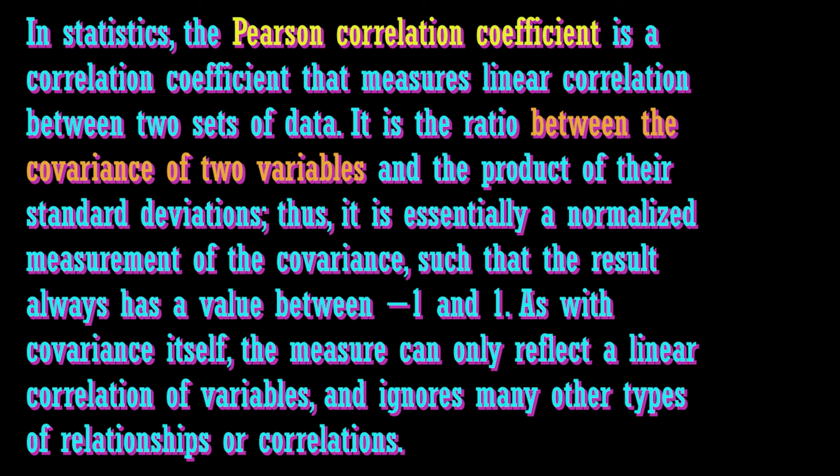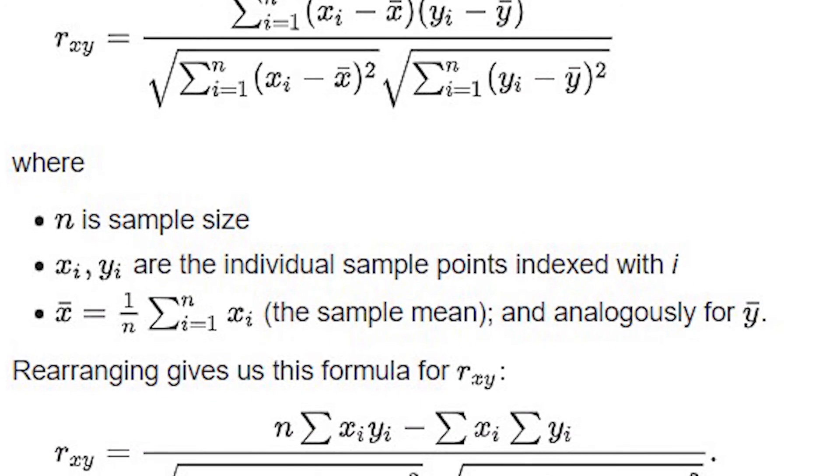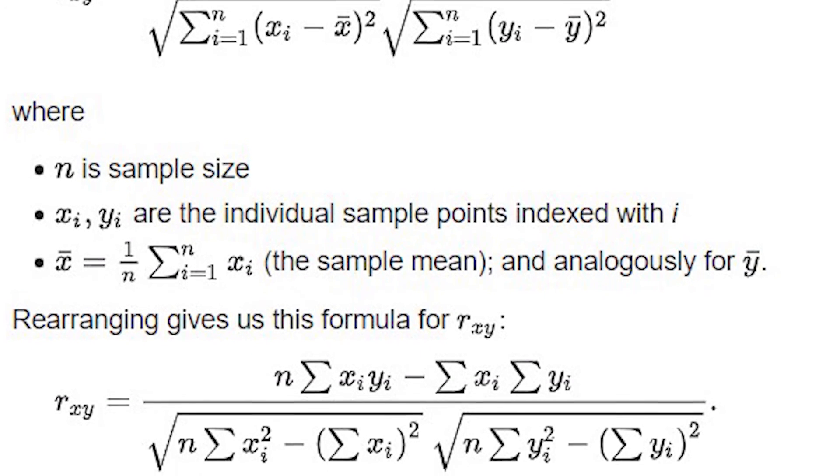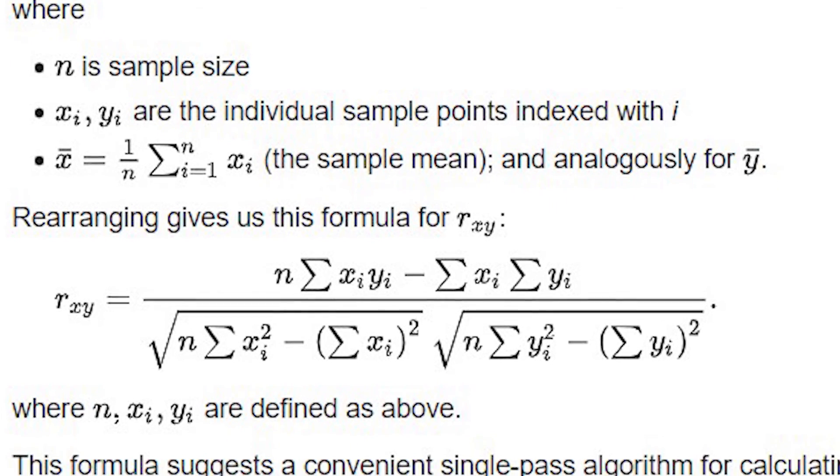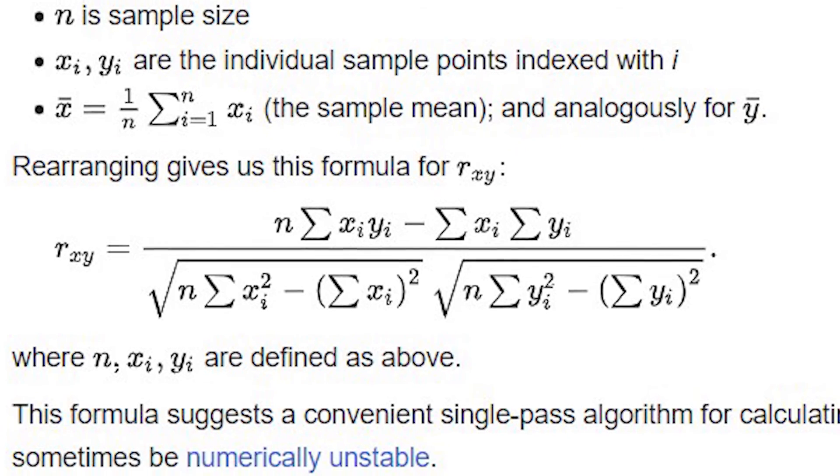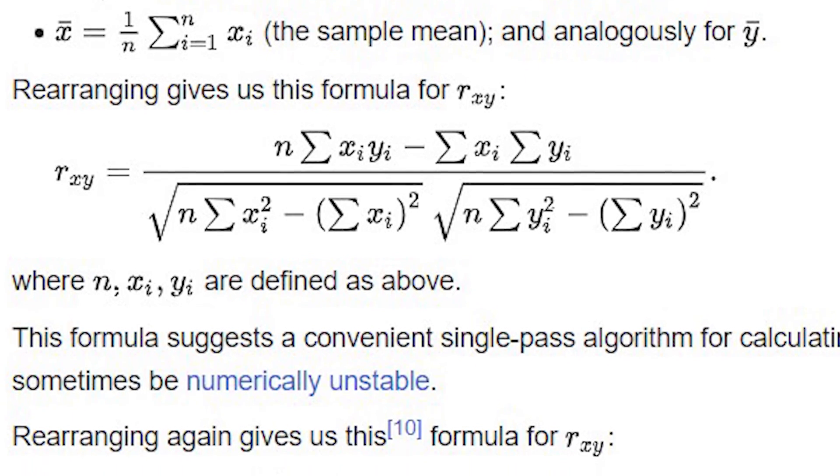Pearson product moment correlation coefficient is a measure of the strength and direction of the linear relationship between two variables that is defined as the covariance of the variables divided by the product of the standard deviations. It is for linear two quantitative variables. Pearson correlation coefficient is commonly used to calculate the coefficient in the lab.